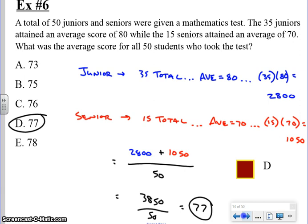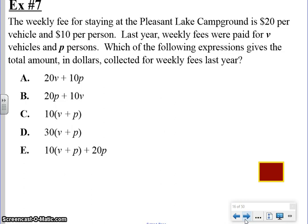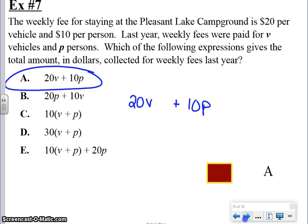The elementary algebra stuff we're going to take a look at. I'll give you a chance to read through this as far as the type of stuff that you can expect. The first problem, number seven, says that the weekly fee for staying at the Pleasant Lake campground is $20 per vehicle and $10 per person. Last year, weekly fees were paid for V vehicles and P persons. Which of the following expressions gives the total amount in dollars collected for weekly fees last year? This is another one of those changing from English to algebra. And luckily, this is a pretty easy word problem.